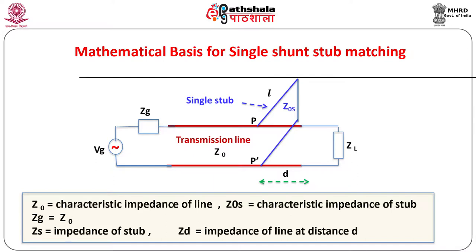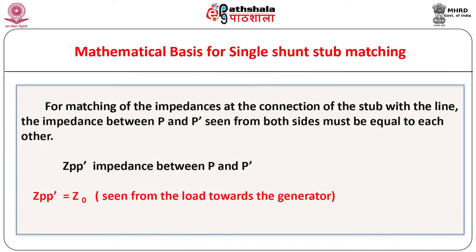Let VG and ZG be the voltage and impedance of the generator respectively. Assume that the line is matched with the generator, hence we have ZG equal to Z0. A single stub of length L and characteristic impedance Z0s is connected across the points P and P-prime in parallel to the transmission line at a distance D from the load. Let ZD be the impedance of the transmission line at distance D from the load and ZS the impedance of the stub. For matching of impedances at the connection of the stub with the line, the impedance between P and P-prime as seen from both sides must be equal. The impedance between P and P-prime as seen from the load towards the generator is equal to the characteristic impedance Z0.